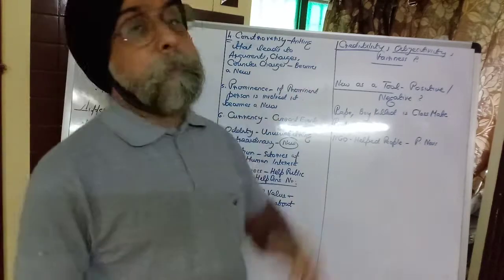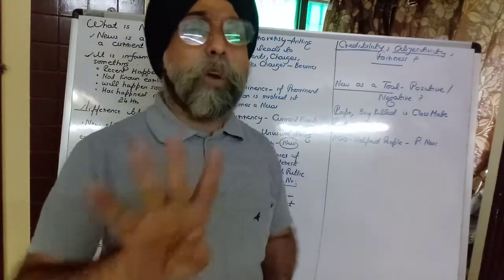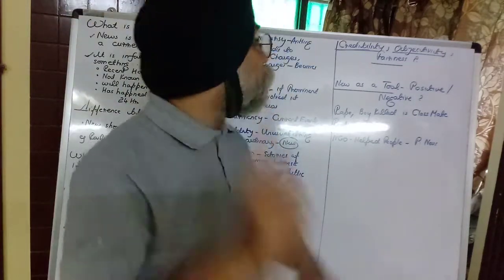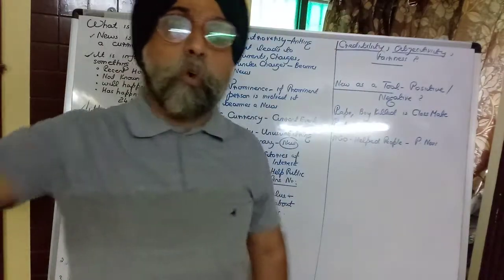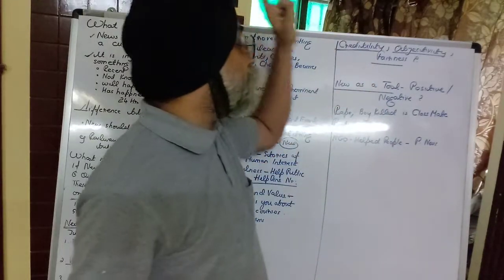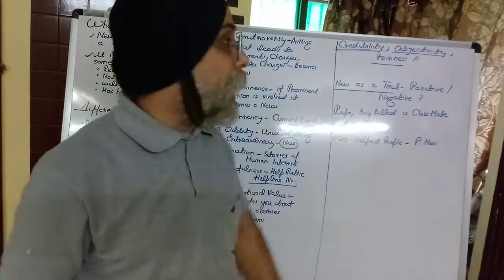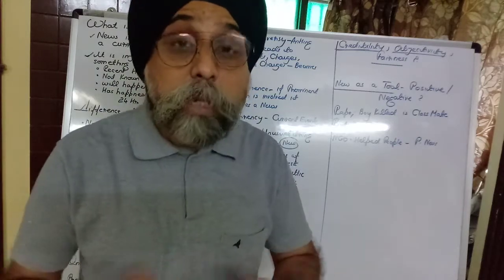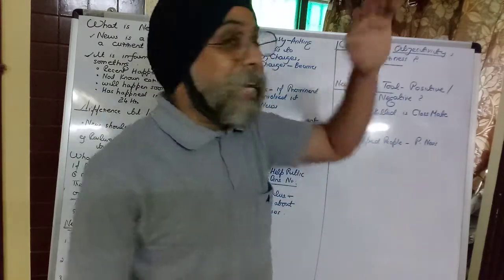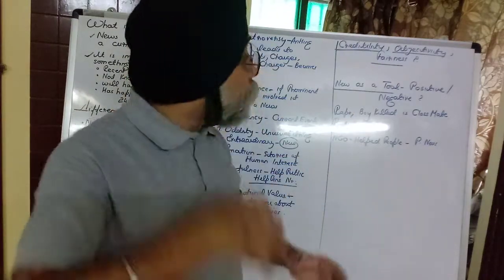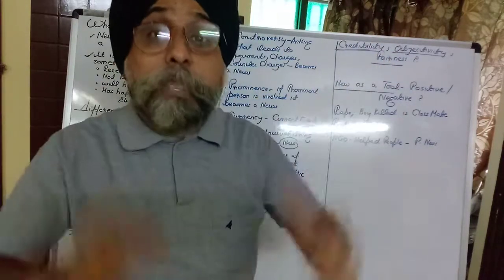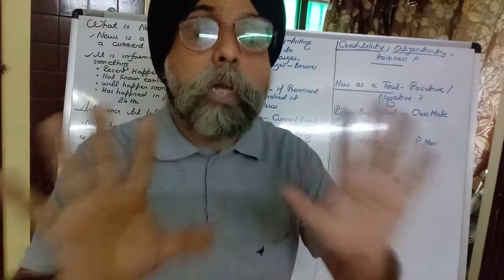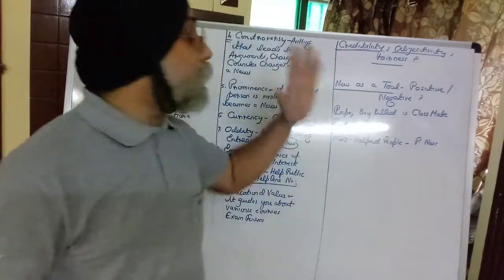A good news channel has a good anchor and good media. Good news — whether a newspaper or news channel — should give you three things: credibility (we can believe the news with no adulteration), objectivity (the news should have a clear objective), and fairness (nothing beyond the truth should be in the news).